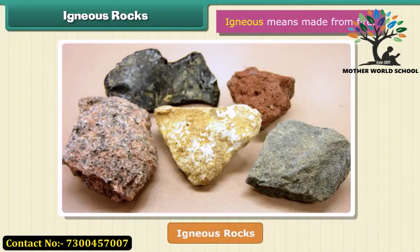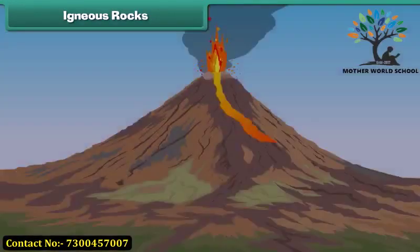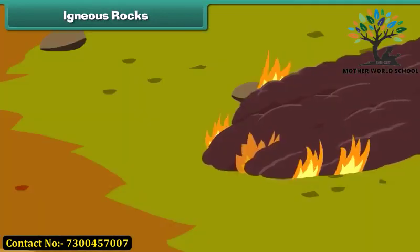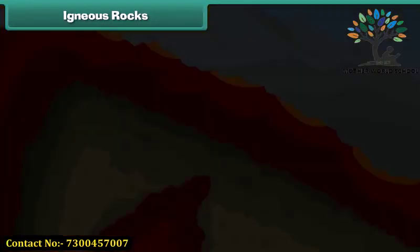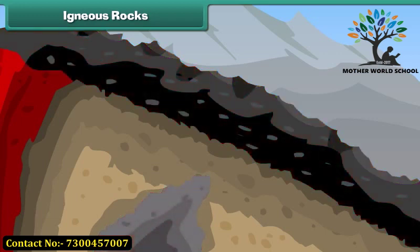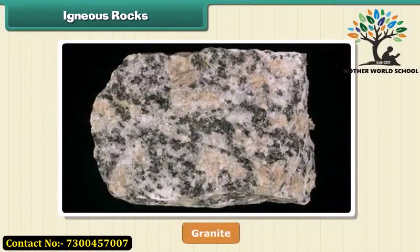Igneous means made from fire. When volcanoes erupt, it causes the liquid rock to rise above the ground. When this liquid rock is present inside the earth, it is called magma. This magma cools and becomes solid. Rocks thus formed are called igneous rocks. They are also called primary rocks. Granite is an example of igneous rock.